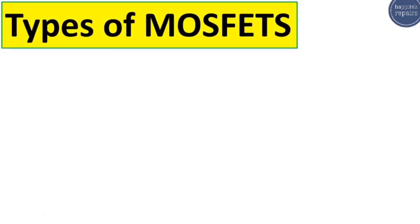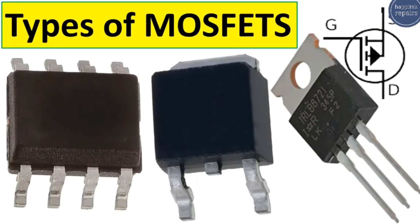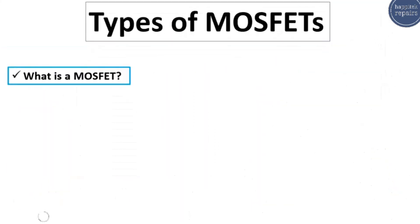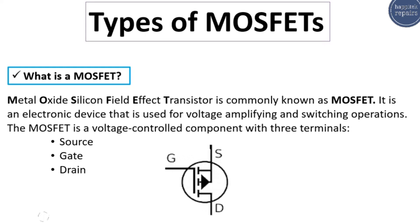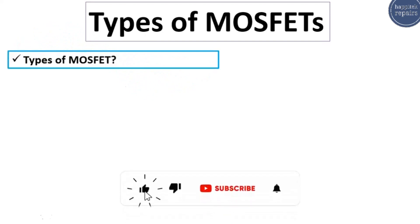In this video I'm going to show you the types of MOSFETs. A metal oxide silicon field effect transistor, or MOSFET, is an electronic device used for voltage amplifying and switching operations. The MOSFET is a voltage-controlled component with three terminals: source, gate, and drain, as you can see in the schematic. Now let's see the types of MOSFETs.